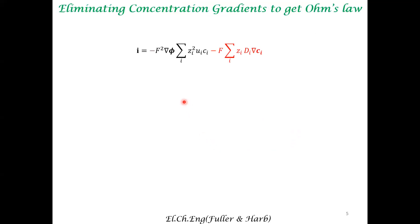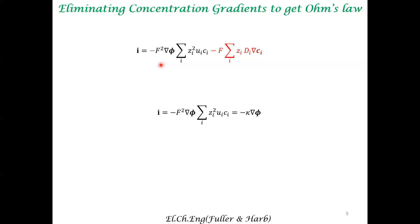Concentration gradients can also be eliminated by stirring and other mechanical factors imposed on the electrochemical system. If we eliminate concentration gradients, the diffusion term also goes to zero. You are then left with a single term from the three terms in the expression for current density.